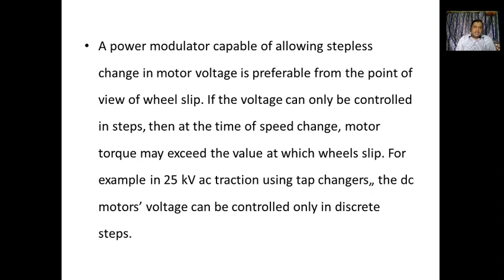A power modulator capable of providing stepless change in motor voltage is preferable. If the voltage supplied to the motor is steady without abrupt changes, it is preferable from the point of view of wheel slip. If the voltage can only be controlled in steps, then at the time of a speed change, motor torque may exceed the value at which wheel slip occurs. For example, in 25 kV AC traction using tap changers, the DC motor voltage can be controlled only in discrete steps.